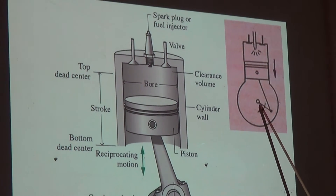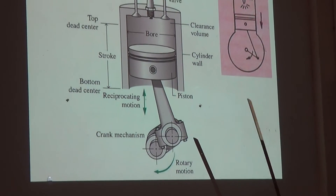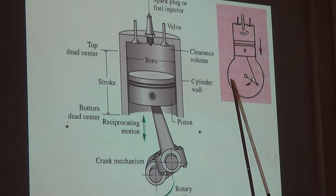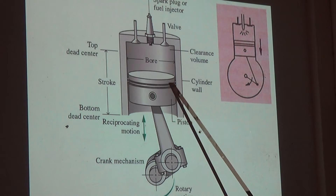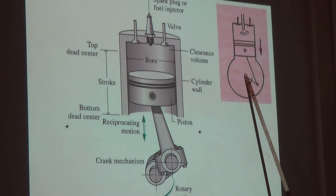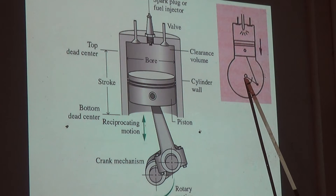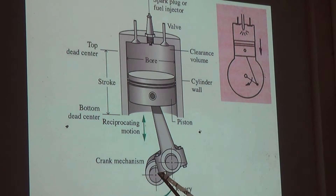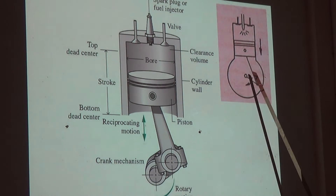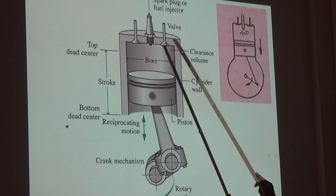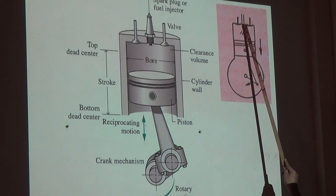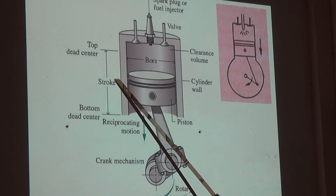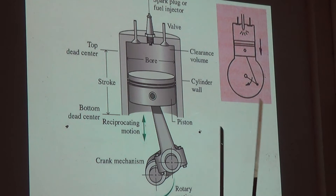This is a spark plug or fuel injector, depending on which engine it is. Then this is the connecting rod, this is the crank, and this is the crankshaft. You can understand that there is a difference between the actual figure and the line diagram — we are simplifying the figure for better understanding. The connecting rod's actual shape is like this, but we show only one line; the crank shape is like this but we show only a circle; the actual spark plug looks like this but symbolically we show it like this.